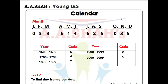I will show you short tricks to remember the month codes. The first 3 months — January, February, March — have codes 0, 3, 3. Then skipping the middle 6 months, the last 3 months — October, November, December — have codes 0, 3, 5. So first group is 0, 3, 3 and the last group is 0, 3, 5.